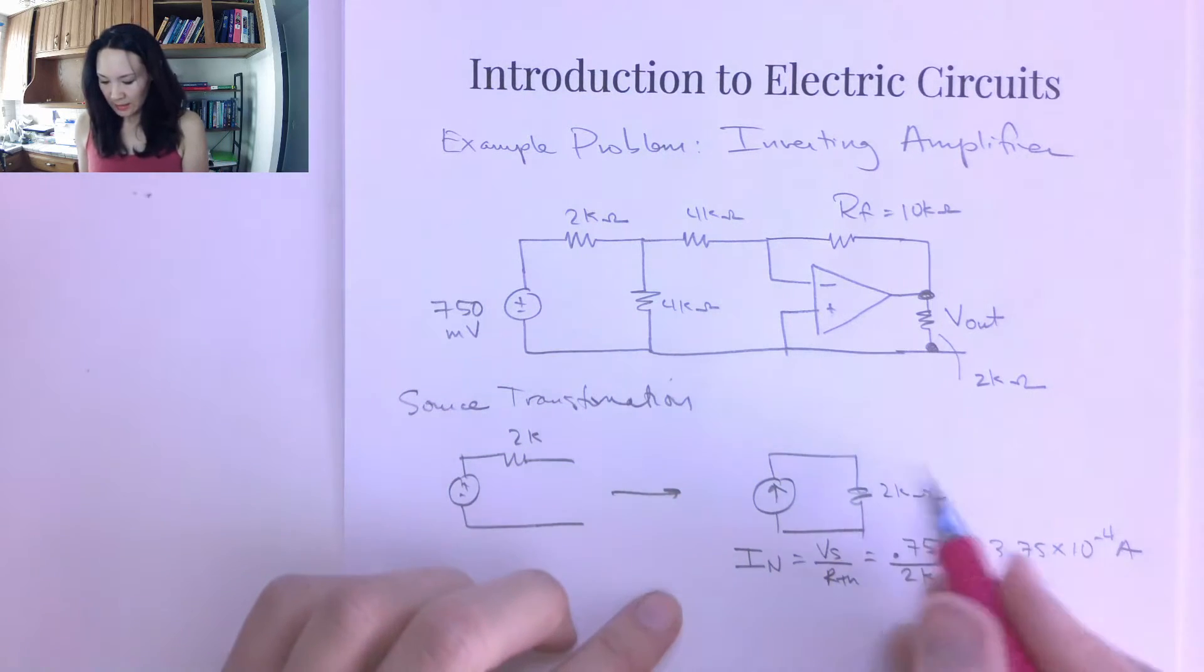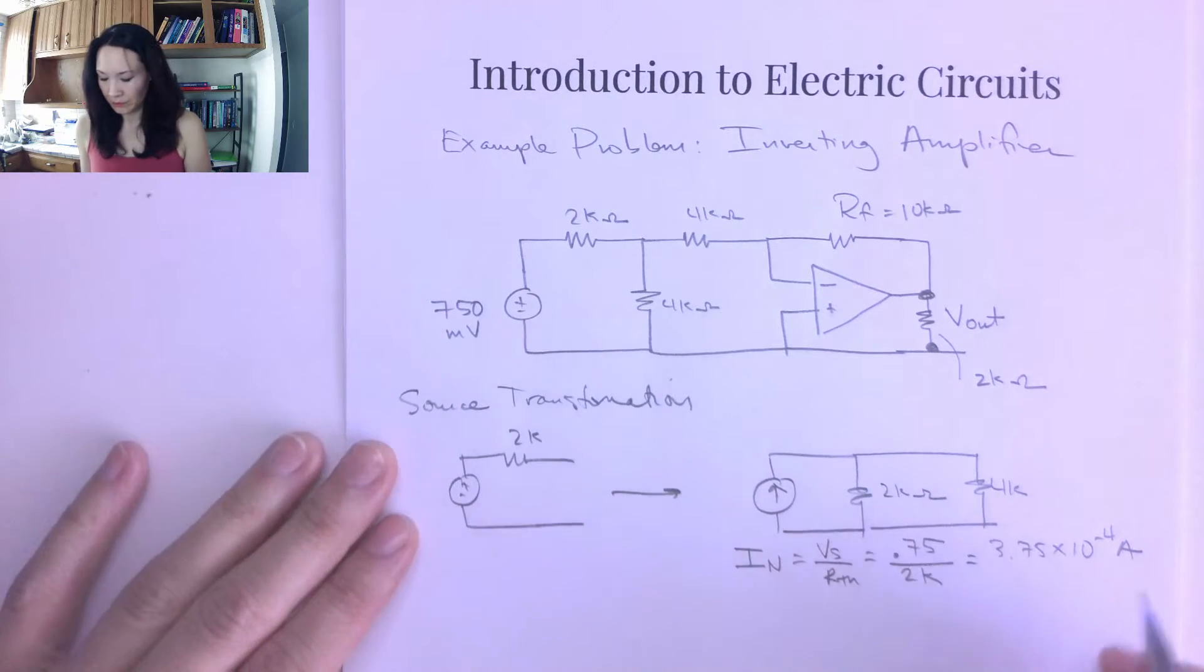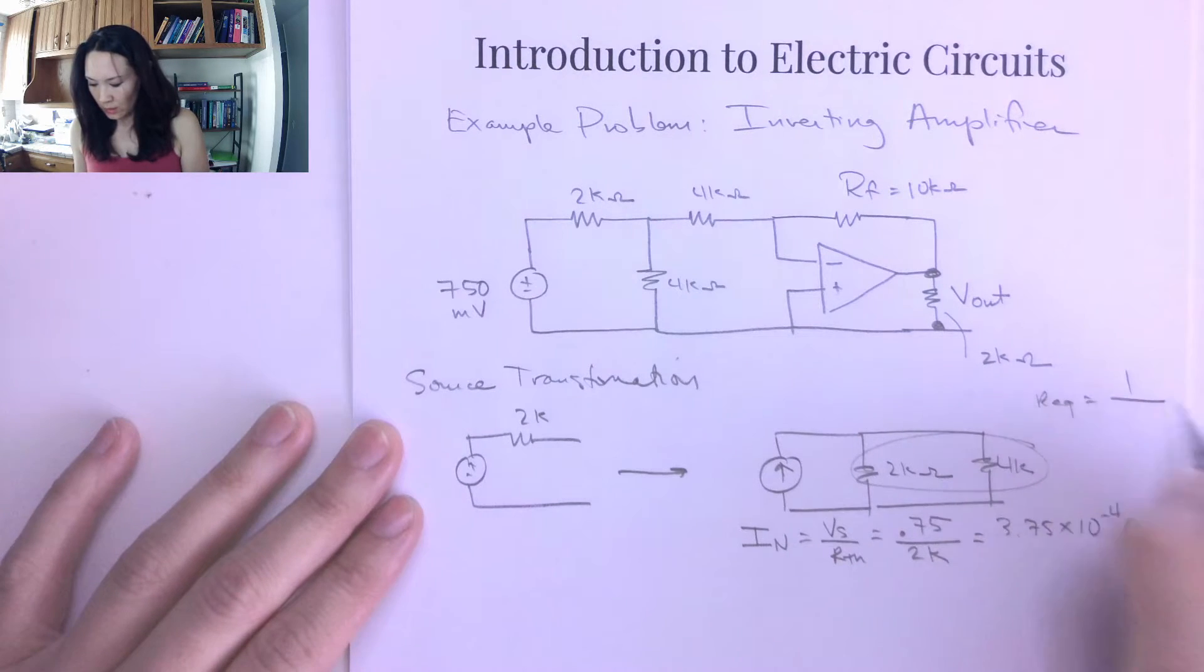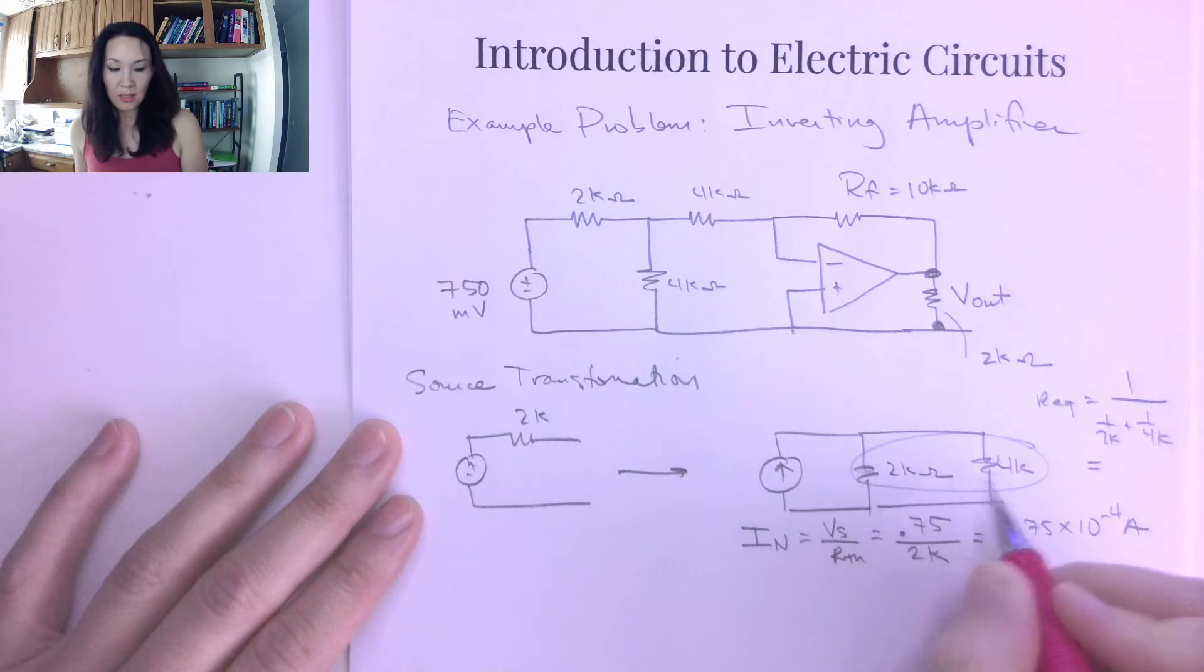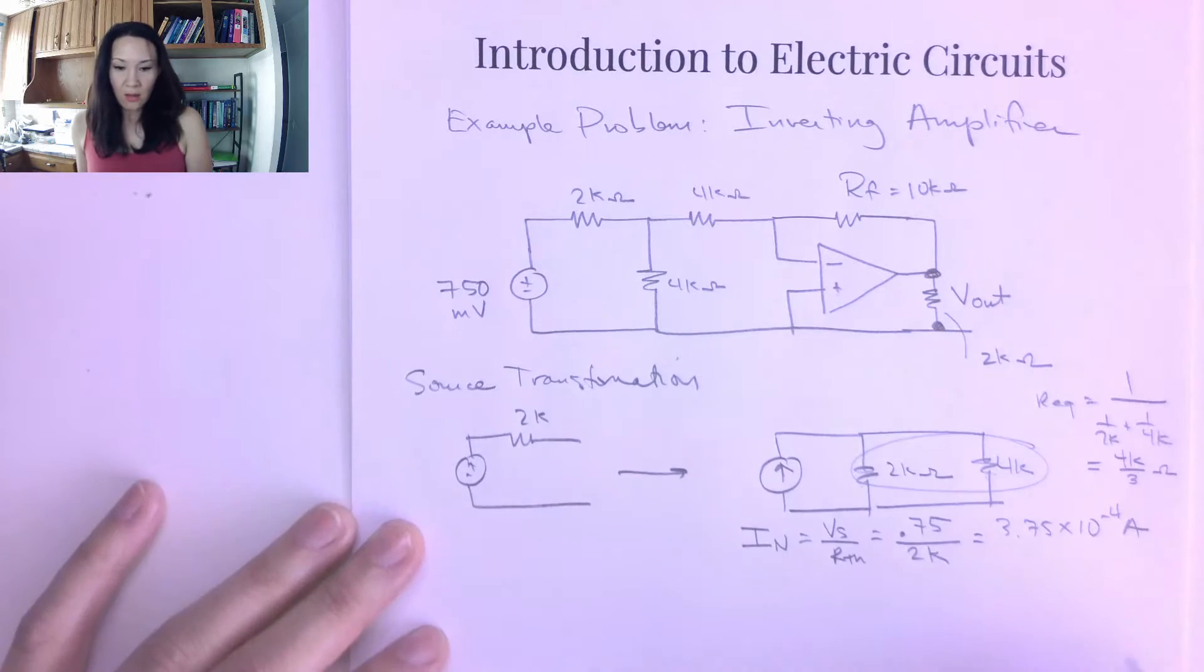So the reason why I did that is because now this 2k ohm resistor is now in parallel with the 4k ohm resistor. So I can easily combine these. So my R-equivalent between these two is 1 over 1 over 2k plus 1 over 4k. So that means I can replace these two resistors with one resistor of value 4k over 3. Okay, great.